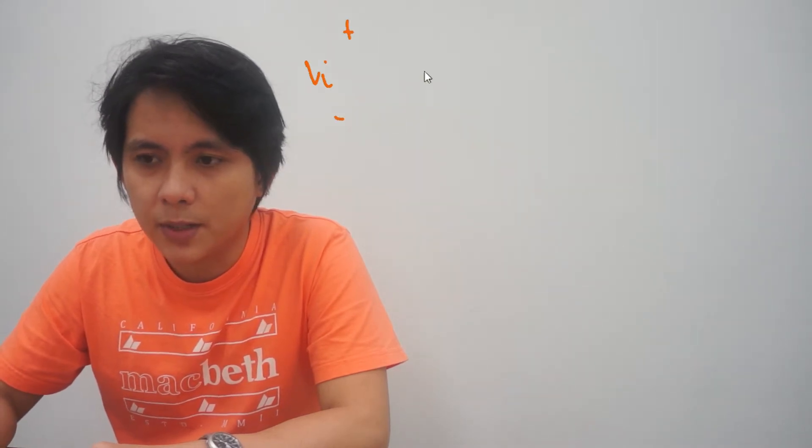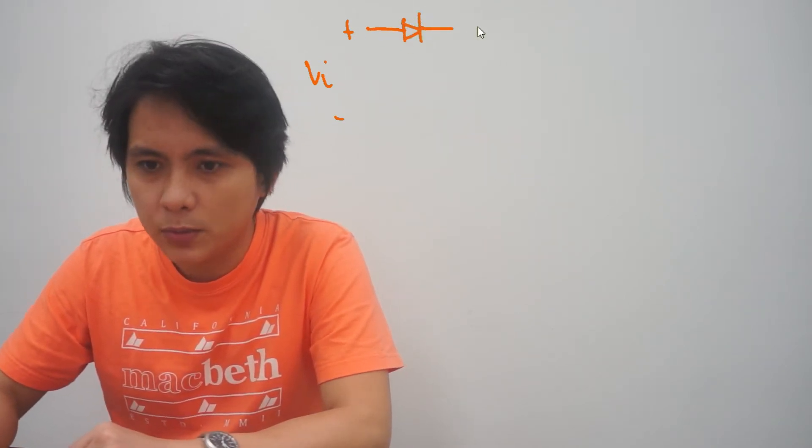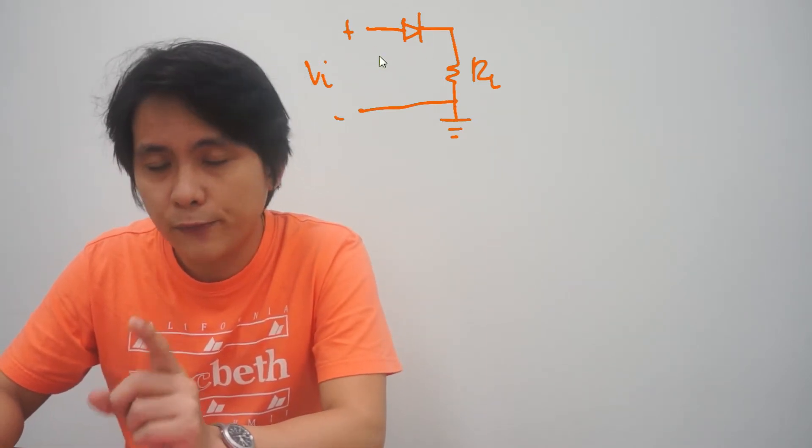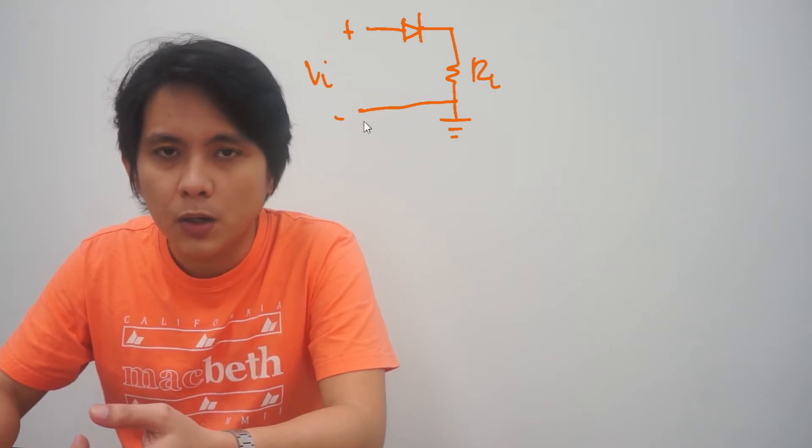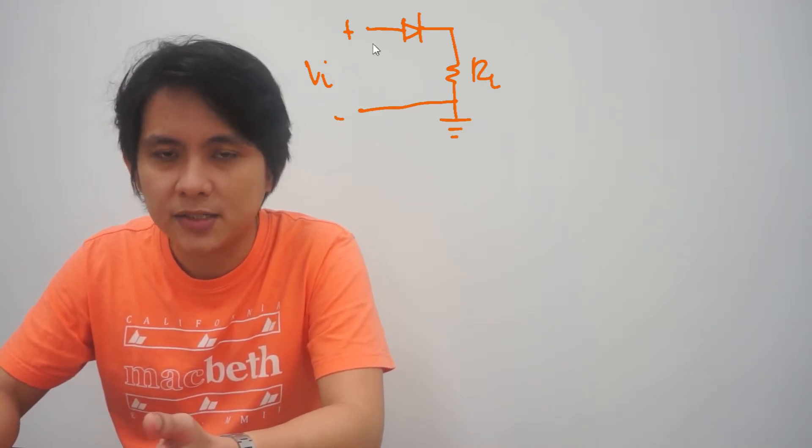Let's discuss half wave rectification. This is done through the use of a single diode. For example, we have a circuit something like this: we have the V input plus and minus. The polarity of this V input changes every time because this is an AC signal. We connect that into a diode, a rectifier diode connected to a load resistance RL. At the first cycle, we have the positive on top and the negative on the bottom, so the diode conducts current because it is in the forward bias region.